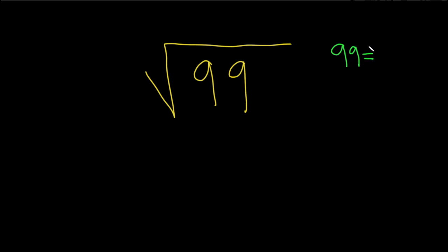If you can do it right away, you want to think about what is the largest factor of 99 that you can take the square root of and actually get a whole number.